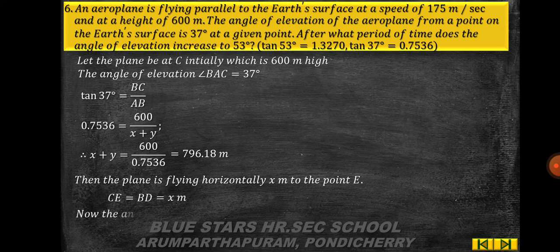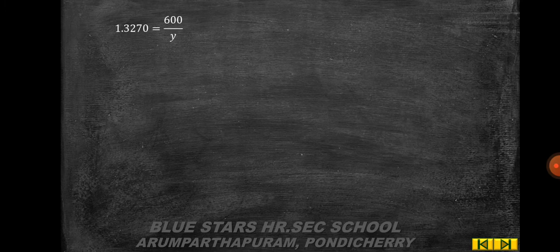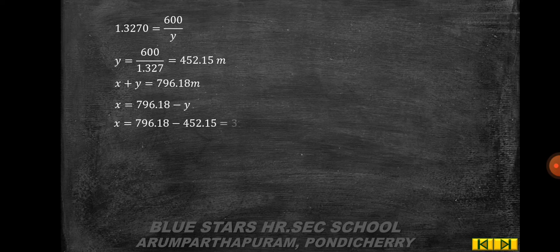The plane flies horizontally to E, so CE = BD = x. The new angle of elevation ∠DAE = 53°. DE = BC = 600 m. tan 53° = DE/AD, so 1.3270 = 600/y, giving y = 600/1.3270 = 452.15 meters. Therefore x = 796.18 − 452.15 = 344.03 meters.